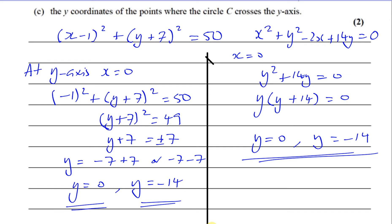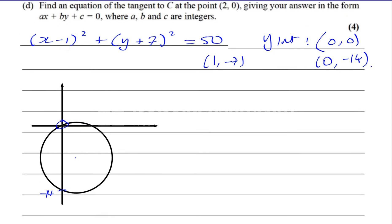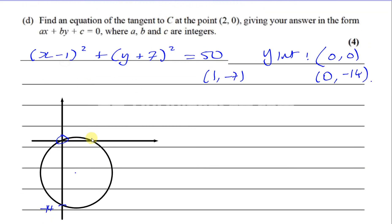The center is at (1, negative 7). The circle passes through the origin and through negative 14 on the y-axis. The point (2, 0) is where we need to find the tangent — it's at the top of the circle near the origin.